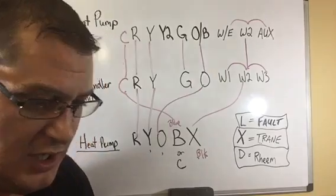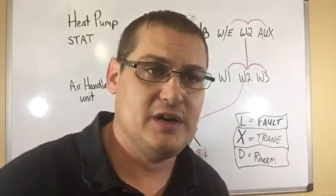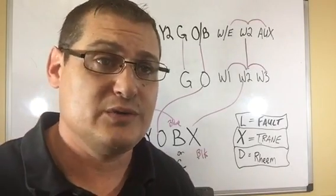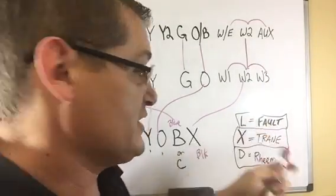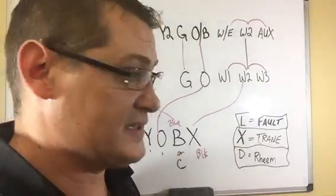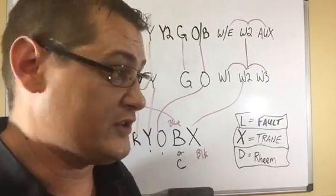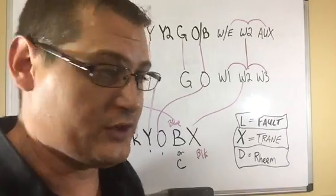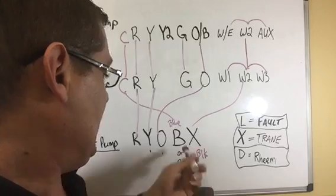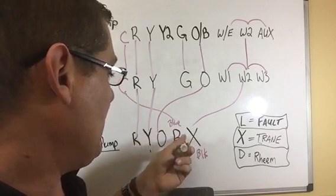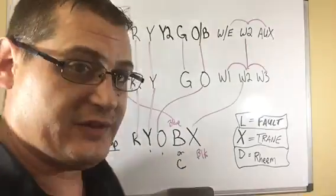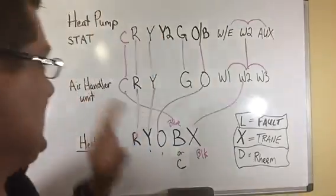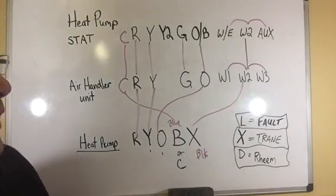Hopefully I didn't confuse you on what we were talking about. I'm just trying to get you to understand you just need to know what the terminals do. It's important to know that L is a fault terminal, X is the signal to call for the strip heat, D on that particular Rheem brand is the signal to call for the strip heat, and knowing that they're using this blue wire called B for common. As long as you know what it is, then you can wire it up properly and easily. That's a brief overview of heat pump thermostat wiring.